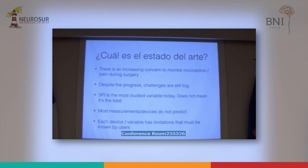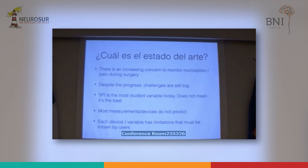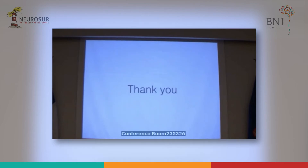Despite the progress, the challenge is still big. SPI is the most studied variable today — that does not mean it's the best. As a summary, most monitors do not predict, only detect. And as doctors and researchers, we know every tool has its benefits and limitations. The ones based on autonomic nervous system do not work well when something else is affecting autonomic tone. The ones based on EEG do not work well when the patient is paralyzed. Thank you.